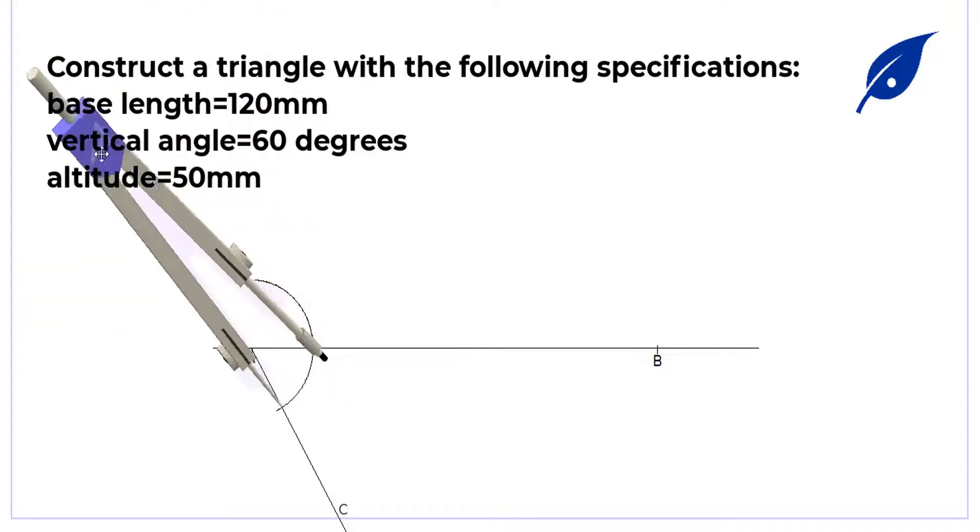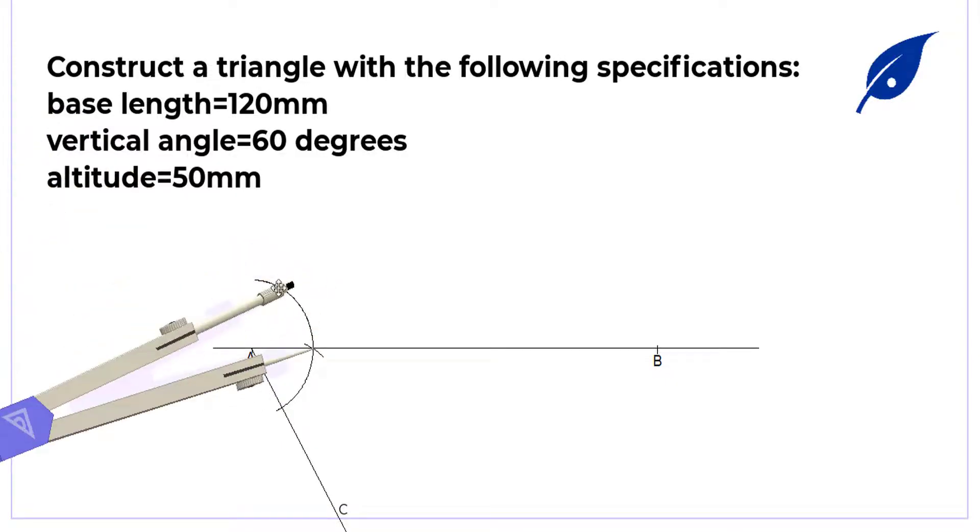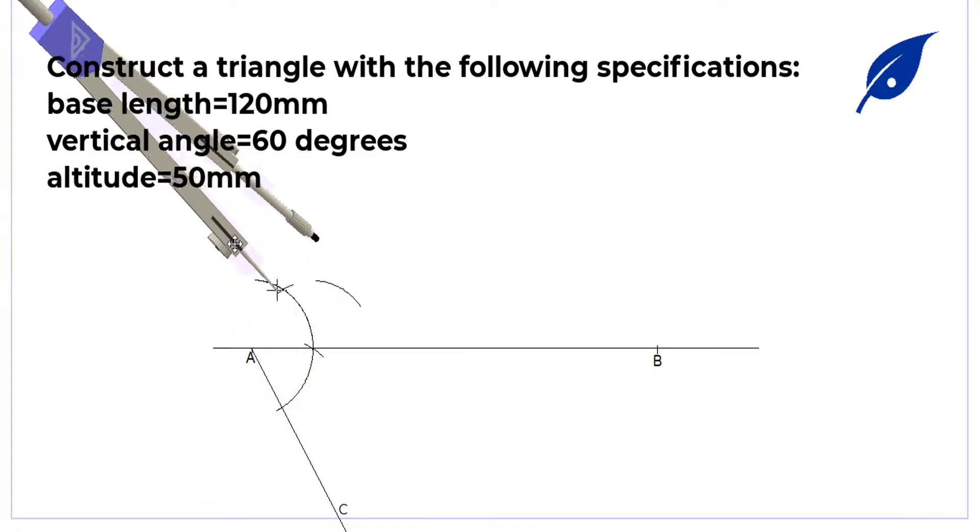Now get a perpendicular bisector at point A. So get a perpendicular line to the angle of 60 degrees, that's the angle BAC.